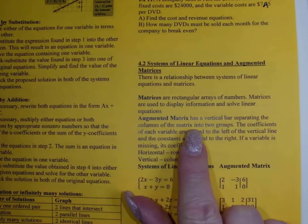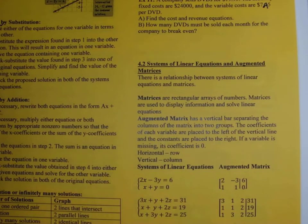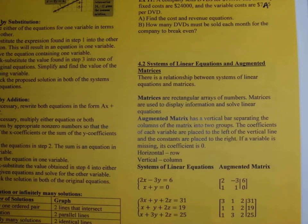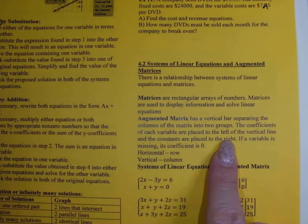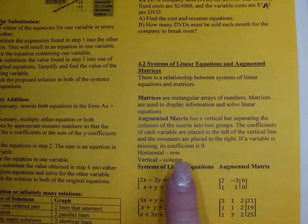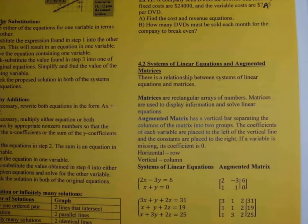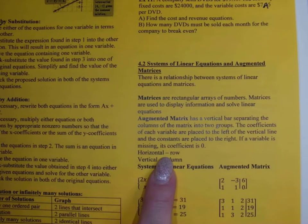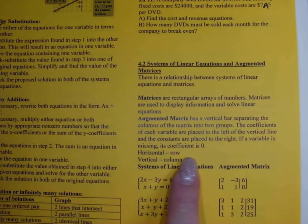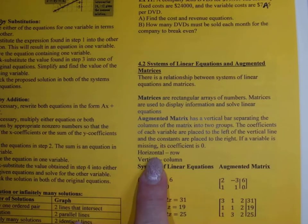An augmented matrix has a vertical bar separating the columns into two groups. The coefficients of each variable are placed to the left of the vertical bar, and the constants are placed to the right. If a variable is missing, its coefficient is zero. Horizontally those are called rows; vertically they're going to be columns.